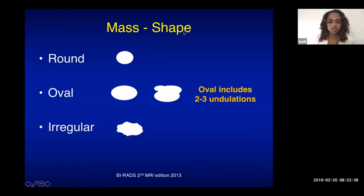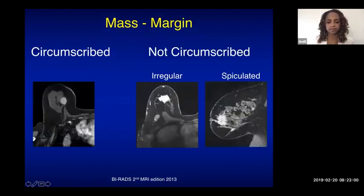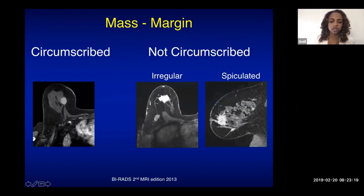When describing a mass, first characterize its shape: round (spherical), oval (elliptical or egg-shaped, including gentle two to three undulations), or irregular (neither round nor oval). Then analyze the margin: circumscribed margins are generally considered benign, while irregular or spiculated margins raise higher suspicion. However, margin alone does not determine benign versus malignant — all factors must be considered together.